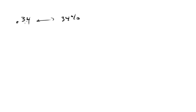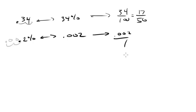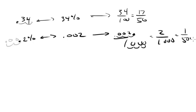Starting with 0.34 as a decimal: that's just 34% by moving the decimal point two places right. As a fraction, it's 34 over 100, which reduces to 17 over 50. Now let's try 0.2% — we have to be careful and move the decimal two spaces left, giving us 0.002 as a decimal. As a fraction, 0.002 over 1 becomes 2 over 1,000 by moving the decimal three places, which reduces to 1 out of 500.